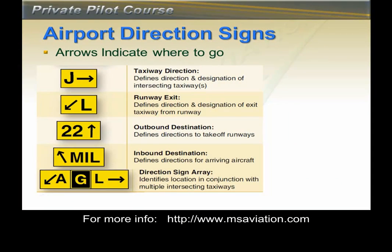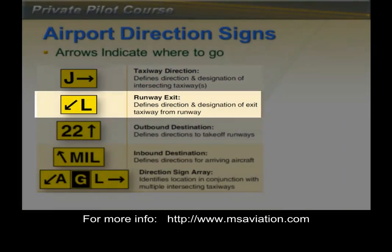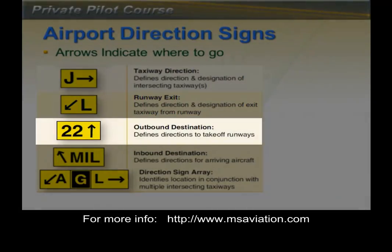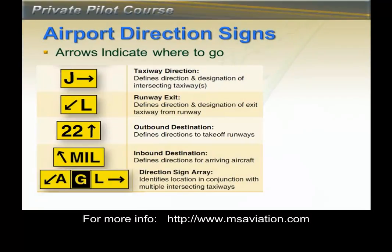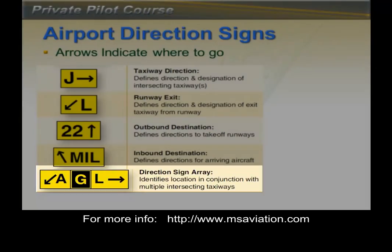Airport direction signs are yellow with black letters and often include arrows to point out the way to a taxiway or destination. The top sign shows that taxiway Juliet is to the right. The next sign shows taxiway Lima is to the left, used where there is a taxiway exiting a runway. The next sign shows runway 22 is straight ahead. The last sign is a combination showing taxiway Alpha to the left, you are on taxiway Golf, and taxiway Lima is to the right.